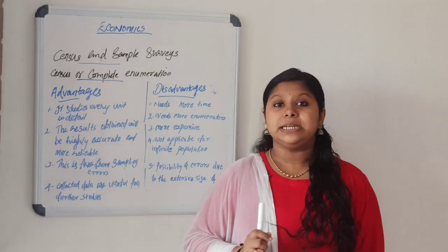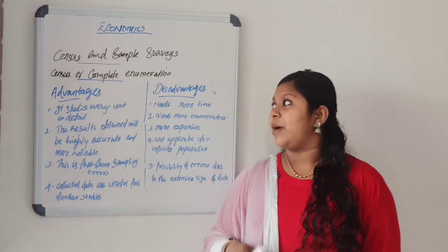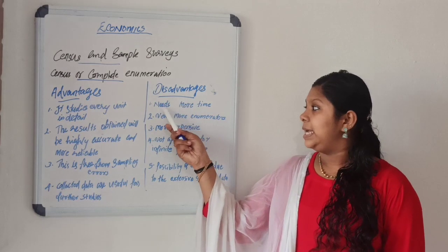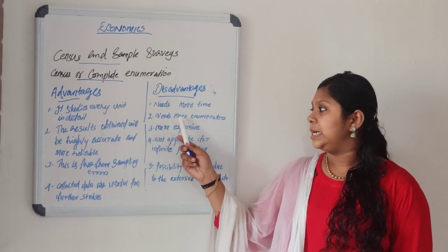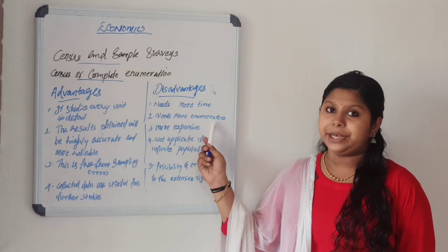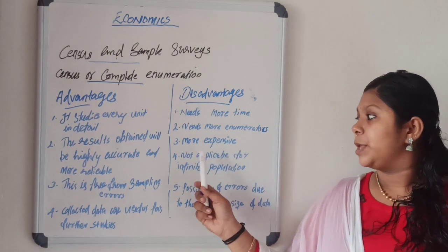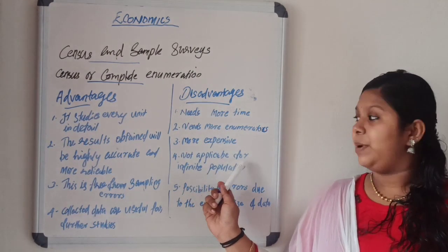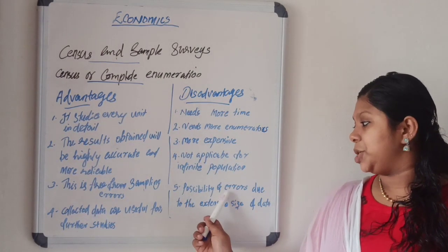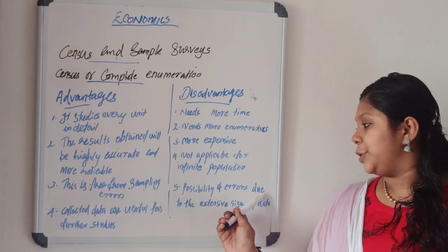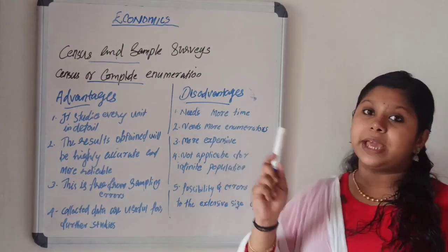Now the disadvantages of census survey. First: it needs more time. Second: it needs more enumerators. Third: it is more expensive. Fourth: it is not applicable for infinite population. Fifth: there is a possibility of errors due to the extensive size of data.